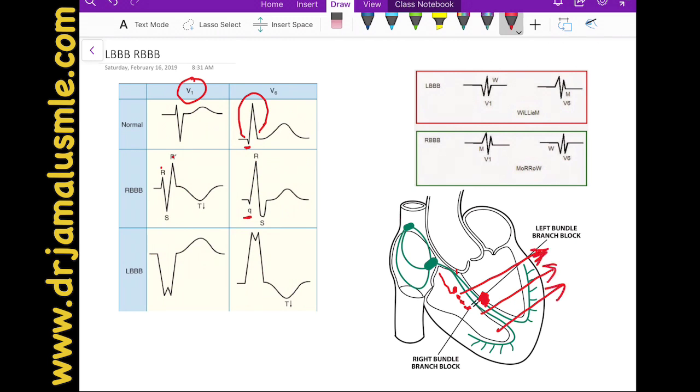There will be no initial negative deflection in V6 as we saw here. Because literally, this side is not accepting electricity at the time where the right bundle branch depolarizes. It's all going to be right bundle, and then you're going to depolarize the left bundle.